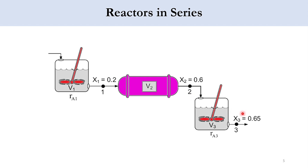To find the overall conversion, we take FA0 and FA3. We need to calculate the conversion at each reactor point, and since the conversions are given, what we need to calculate are the volumes V1, V2, and V3.